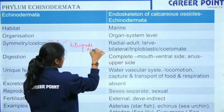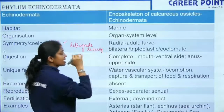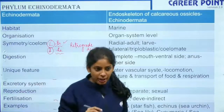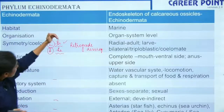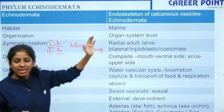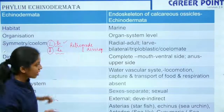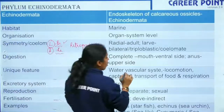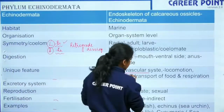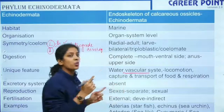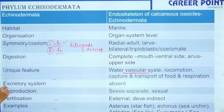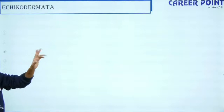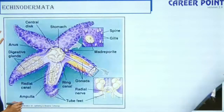Just like sponges have a water canal system, Echinoderms have a water vascular system. The key thing to remember in Echinodermata is that the symmetry is reversed — the adult has radial symmetry while the larva has bilateral symmetry.